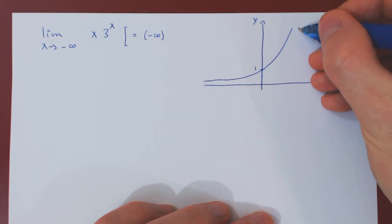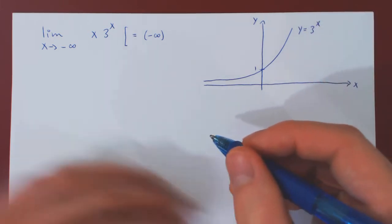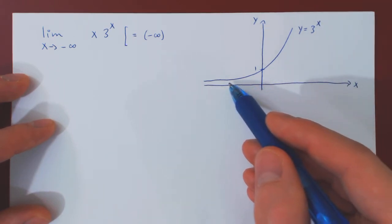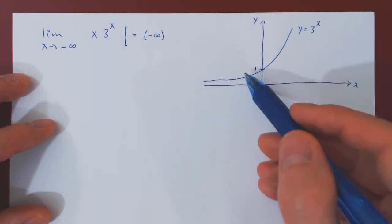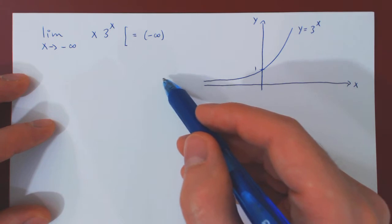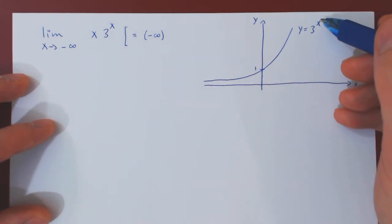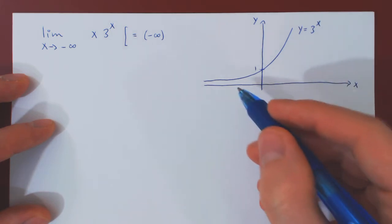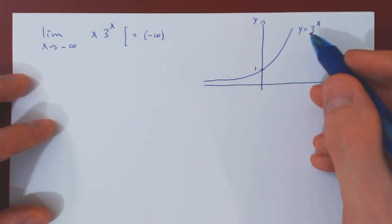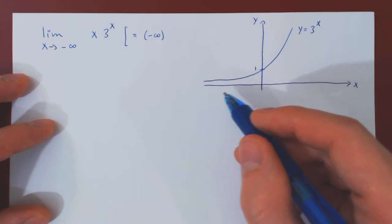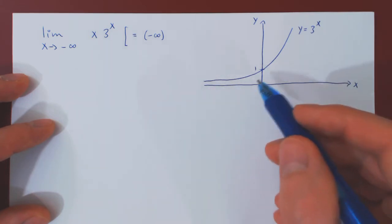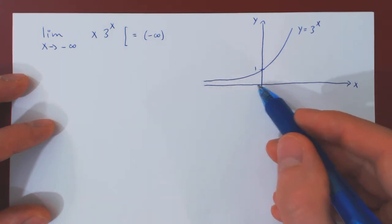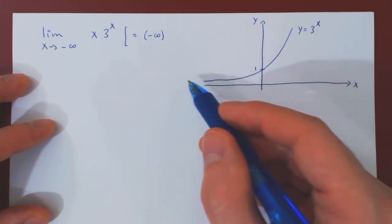At 0, the value is 1. So you see when x is very large and positive, 3 to the x is even larger and positive. But when x goes to negative infinity, then 3 to the x is approaching 0. Think about this at negative integer values. At negative 1, the value is 3 to the minus 1, which is 1 third. At negative 2, the value is 3 to the minus 2, which is 1 over 9. And then you have 1 over 27, 1 over 81, and so forth. So the larger x is in negative, the smaller 3 to the x is. So as x goes to minus infinity, 3 to the x is shrinking to 0.